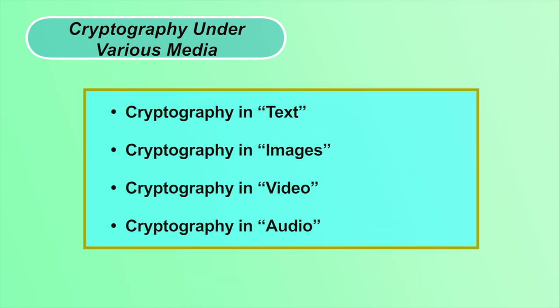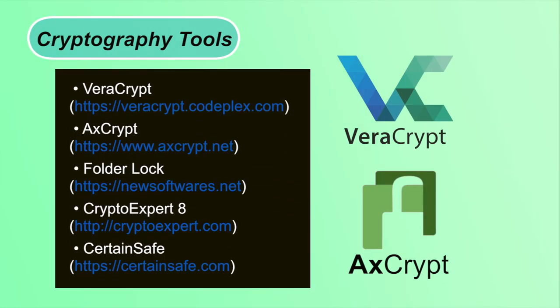Cryptography can be applied to any media — input can be text, images, audio, video, etc. The encryption algorithm converts the original input to cipher form, and the decryption algorithm converts it back. We have various cryptography tools like VeraCrypt, xCrypt, Folder Lock, Crypto Expert 8, and Certain Safe, in which various encryption algorithms like DES, 3DES, RSA, and AES have already been implemented. These open-source tools are freely available on the internet; there is no need to implement algorithms yourself. Links for downloading these tools are given in the slide.